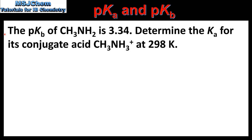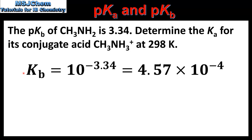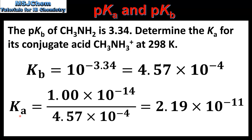We'll end the video by looking at one more example. The pKb of methanamine is 3.34. Determine the Ka for its conjugate acid at 298K. The first step is to find the Kb of methanamine: Kb = 10⁻³·³⁴, which gives us 4.57×10⁻⁴. To find the Ka for the conjugate acid we divide Kw by the Kb of methanamine, which gives us a value of 2.19×10⁻¹¹.